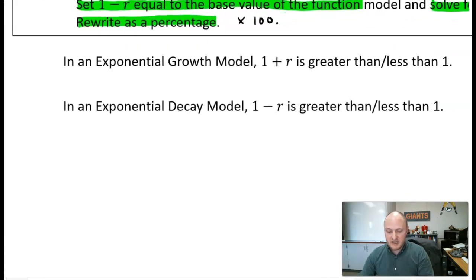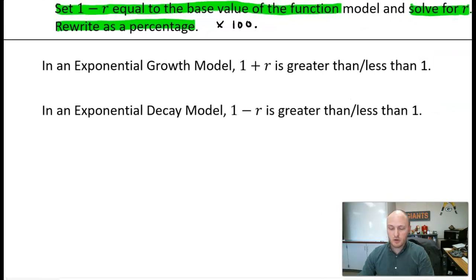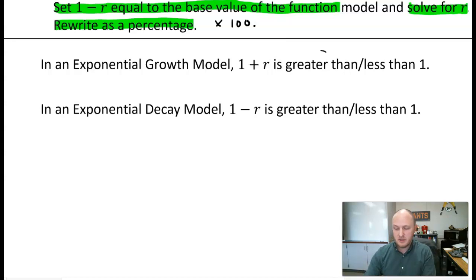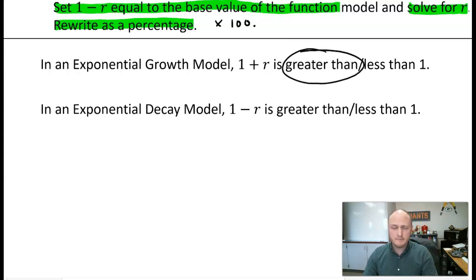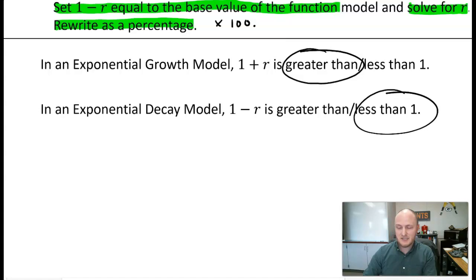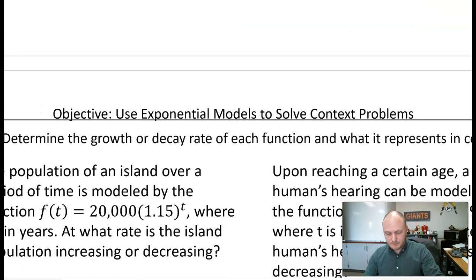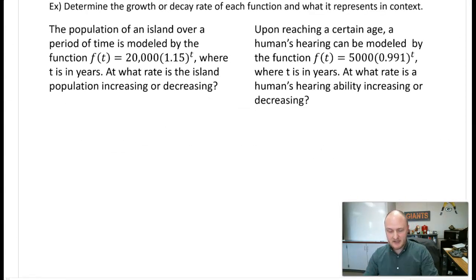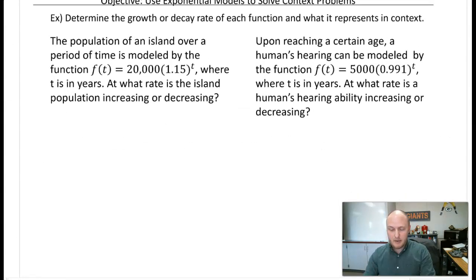Checking for understanding: in an exponential growth model, one plus r is greater than one — the base needs to be greater than one. In an exponential decay model, one minus r is going to be less than one. So let's go ahead and apply this.